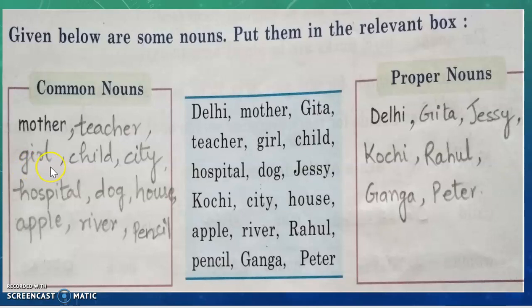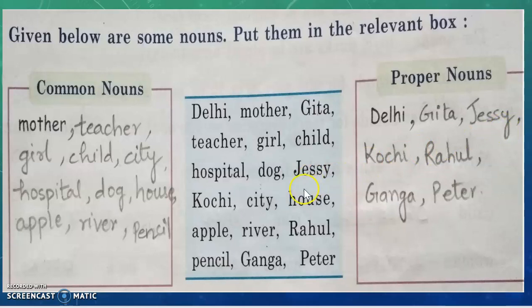Girl is a common name to all the girls. Child — child is a common noun. Hospital — it's a common noun. Dog — it's also a common noun. Jessie — Jessie is a proper noun because it's a name of a particular person. Kochi — Kochi is a proper noun because it's a name of a particular city. City is a common noun because city can be any city.